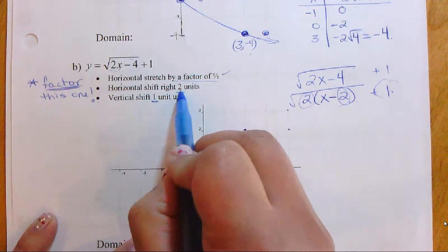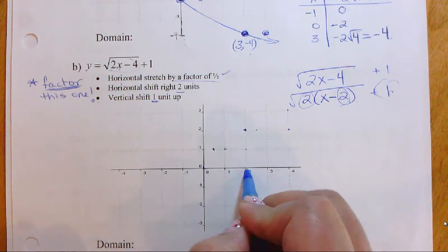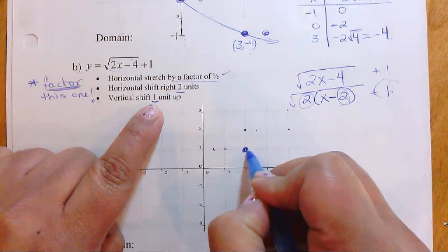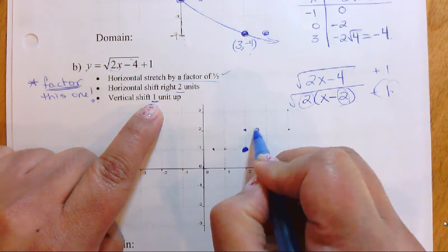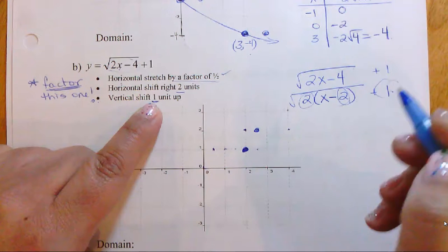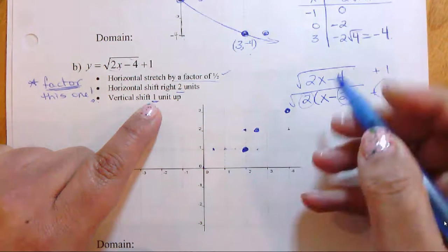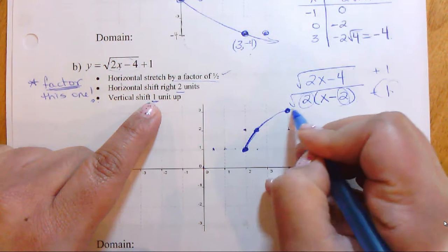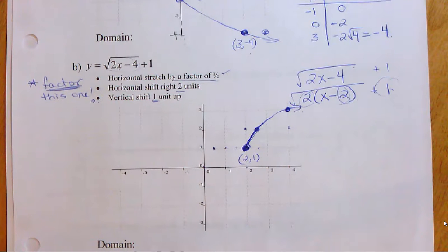Originally the parent function points were at zero, one, and four. After the horizontal stretch of one-half, the x-values are halved: the four becomes two. Then applying the horizontal shift right two and the vertical shift up one at the same time — being careful on half-values to move one full unit — the end point lands at two comma one.